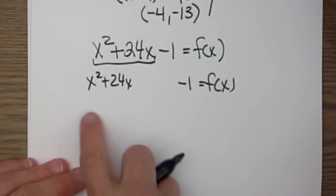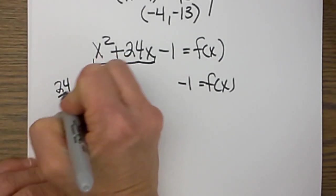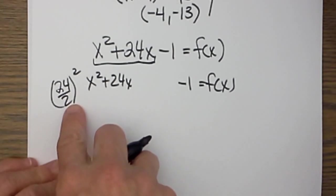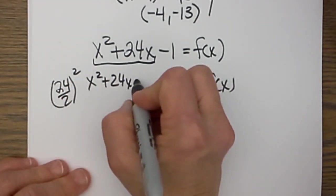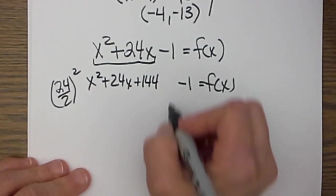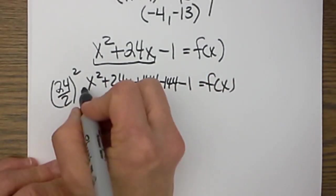So now let's complete the square. We are going to take 24 and we are going to half it and then square it. So half of 24 is 12 and 12 squared is 144. But we can't just add 144 without subtracting 144, so let's subtract 144.